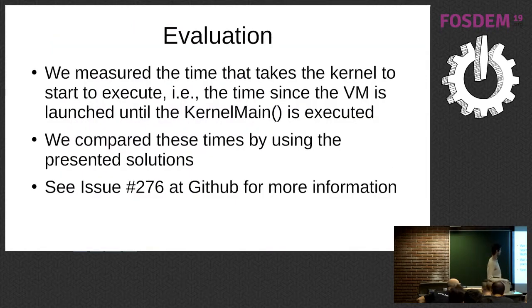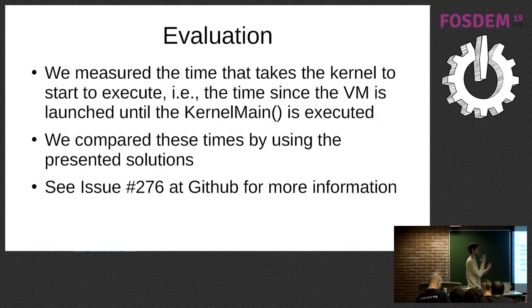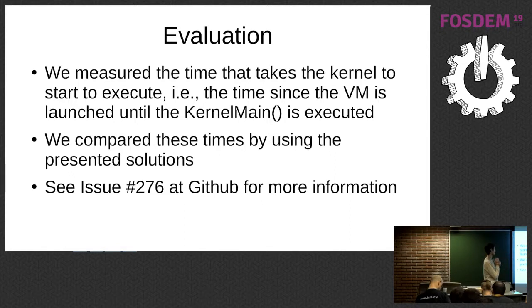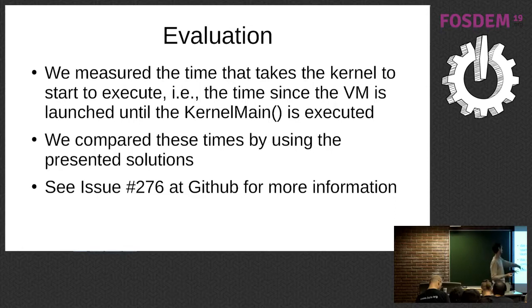So how did I compare these approaches? The test was quite simple. I measured the time from launching the VM until the VM is shut down. To shut down the VM, I just added some code in the kernel main. Then I did this for the three approaches and compared the time. If you want to see more about the script I used, you can see it at the provided link — though I'll admit the script is just a sort of sketch.